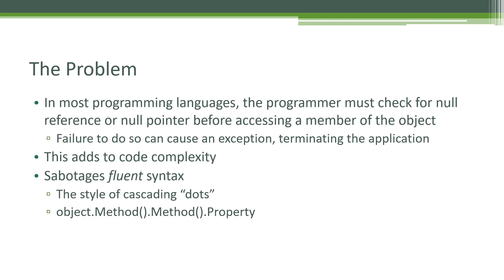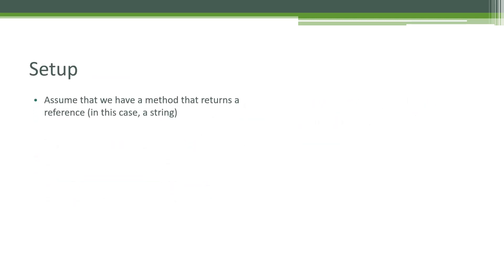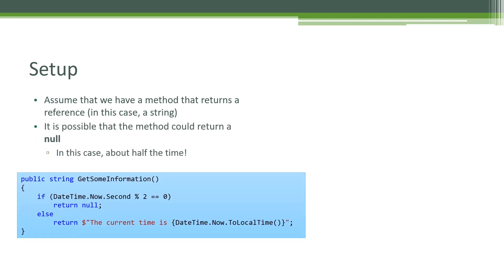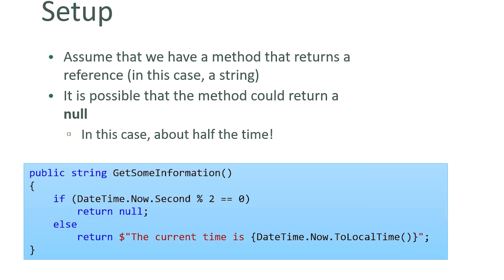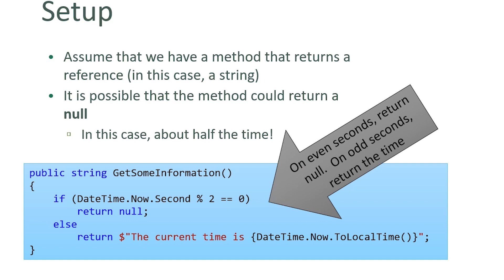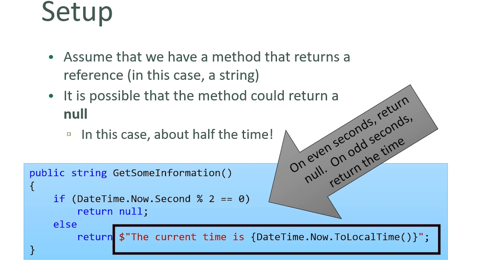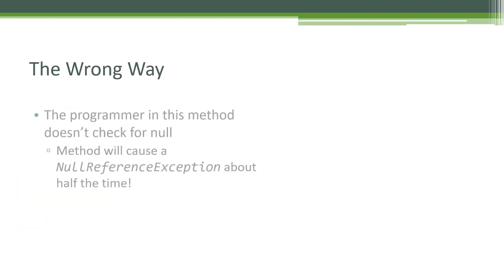Let's assume that we have a method that returns a reference — in this case, a string. It is possible that the method could return null. This method is called GetSomeInformation and it returns a string based on whether the current time is an even or odd number. On even seconds we return null, and on odd seconds we return a string containing the text 'the current time is' and the time. This also contains an interpolated string, which is another one of our Learn It Short videos.